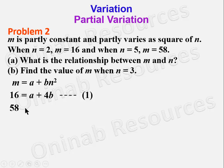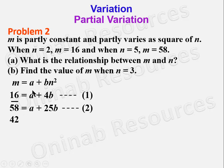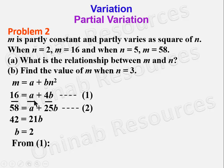When n = 5, m = 58: 58 = a + 25b — equation 2. Subtracting equation 1 from equation 2: 58 − 16 = 42, a − a = 0, and 25b − 4b = 21b, so dividing both sides by 21 gives b = 2.